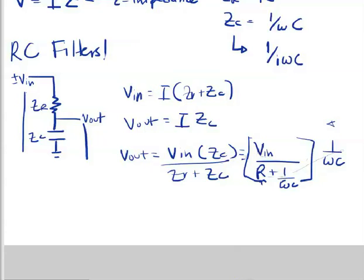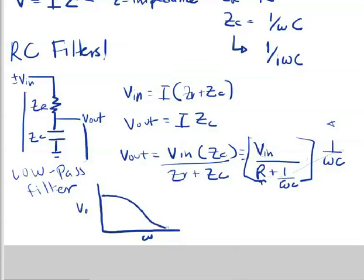This configuration is known as a low-pass filter. And so this low-pass filter lets in the smaller frequencies. We can draw this result with a simple graph. These are the frequencies in ω. This is V_out. And we can see that the high frequencies cause the output voltage to approach 0.